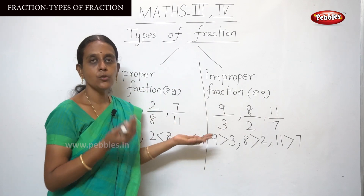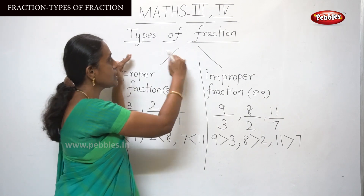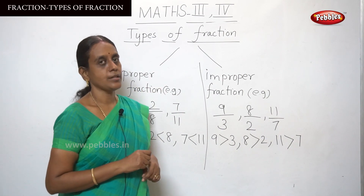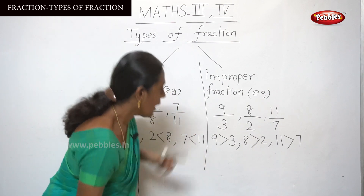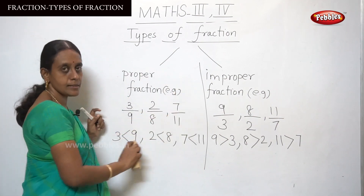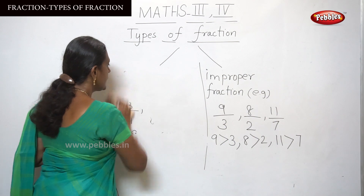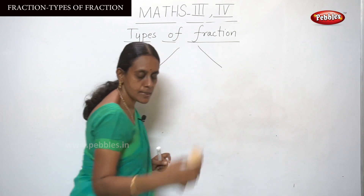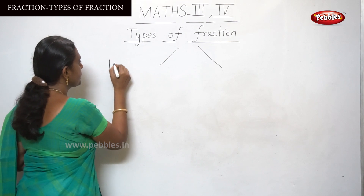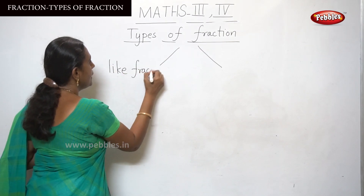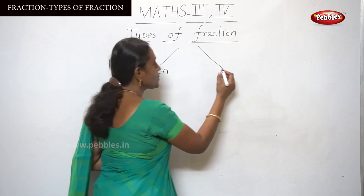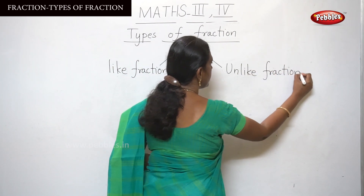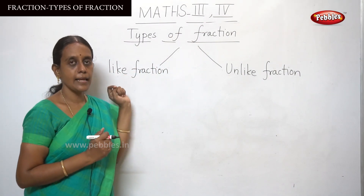So based upon the numerator and denominator, we can classify fractions into two types: proper fraction and improper fraction. Now let me move on to the next types of fraction. The next types are like fraction and unlike fraction.